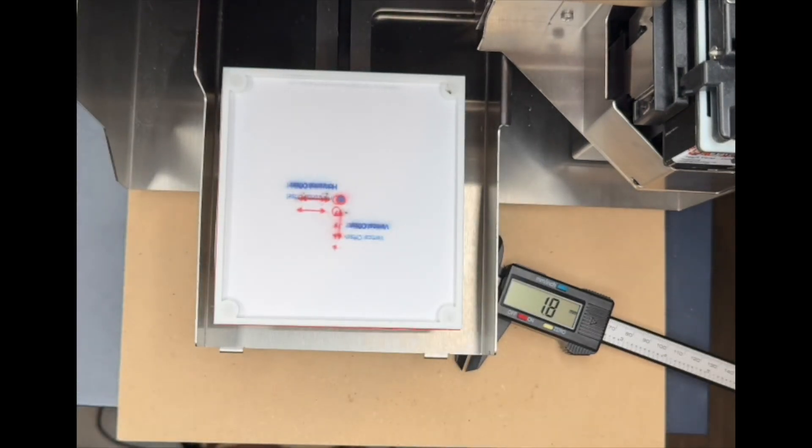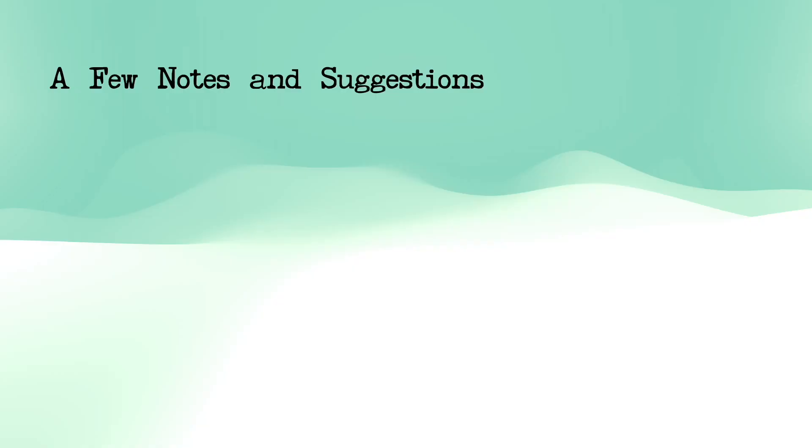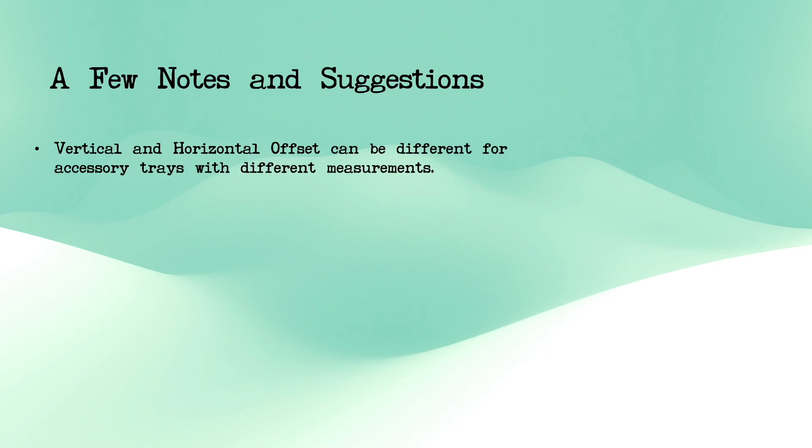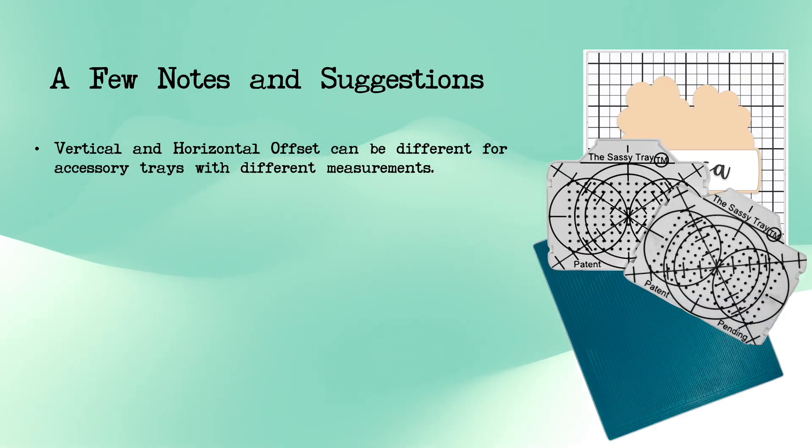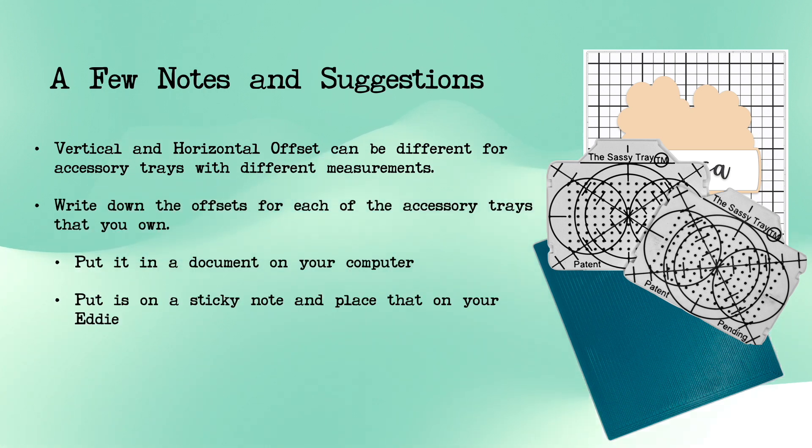What you might be wondering is, now, what if I'm going to use a sassy tray? What do I do? Before you redo this on a sassy tray, write your numbers down. Record them. Put them on a sticky note on top of your printer. So that you can remember what they are, and you can come back to them when you switch back to using this tray.